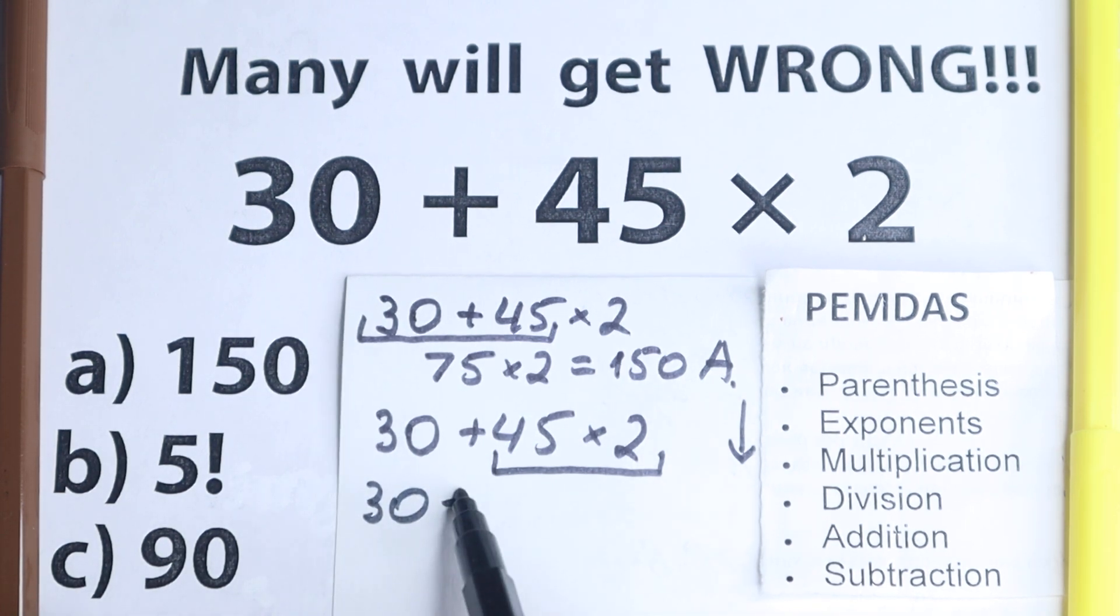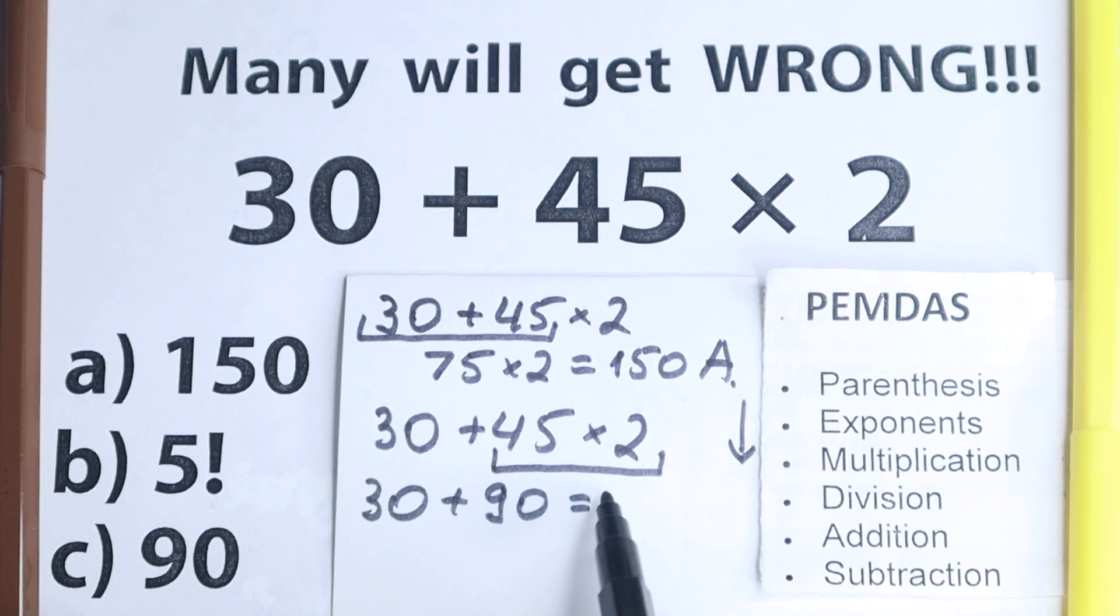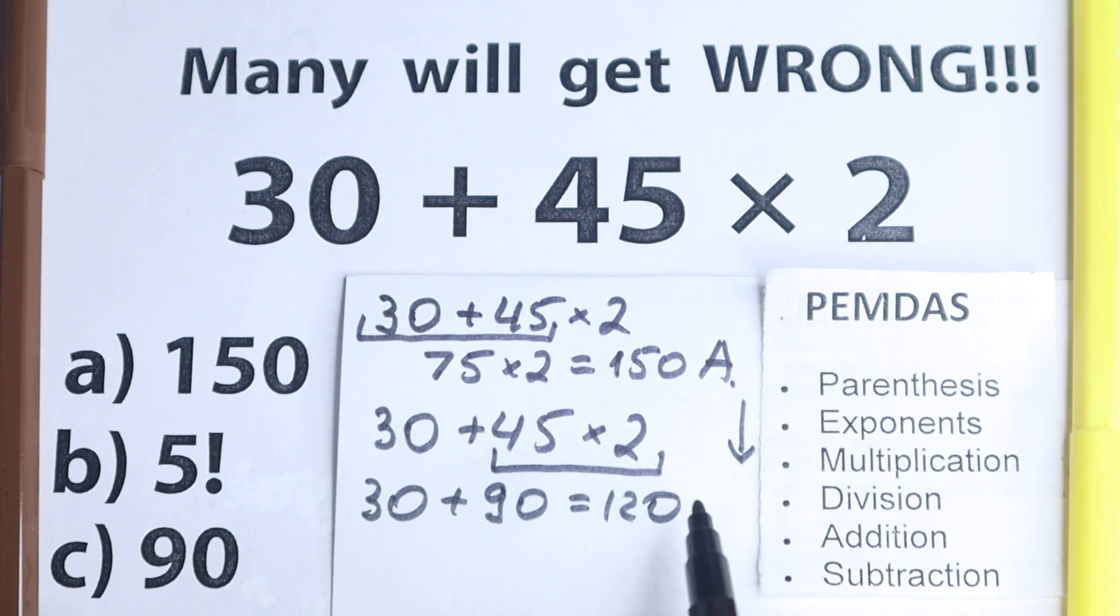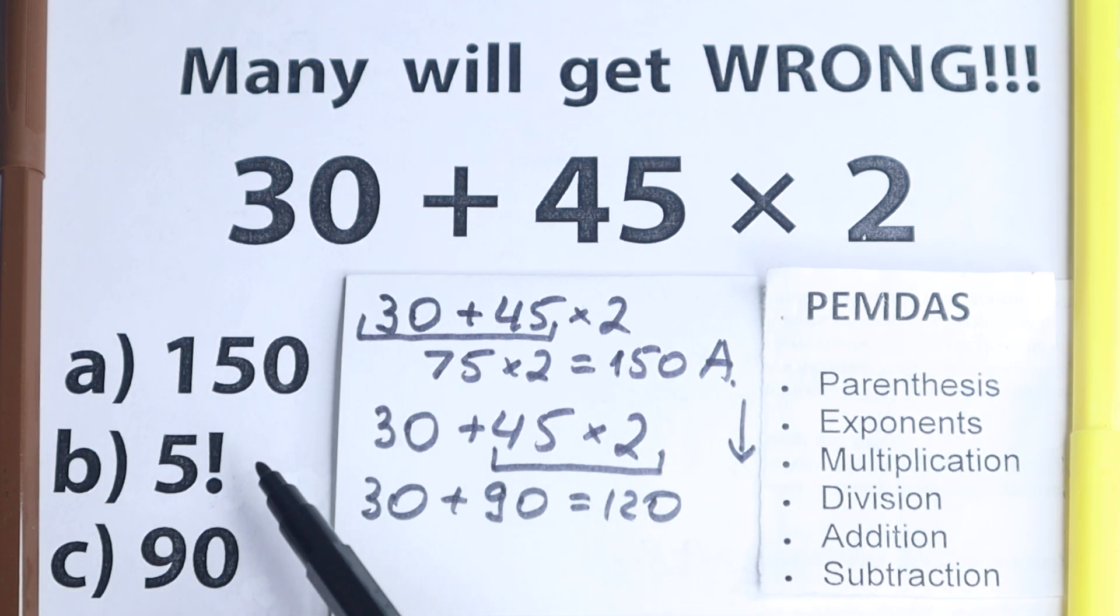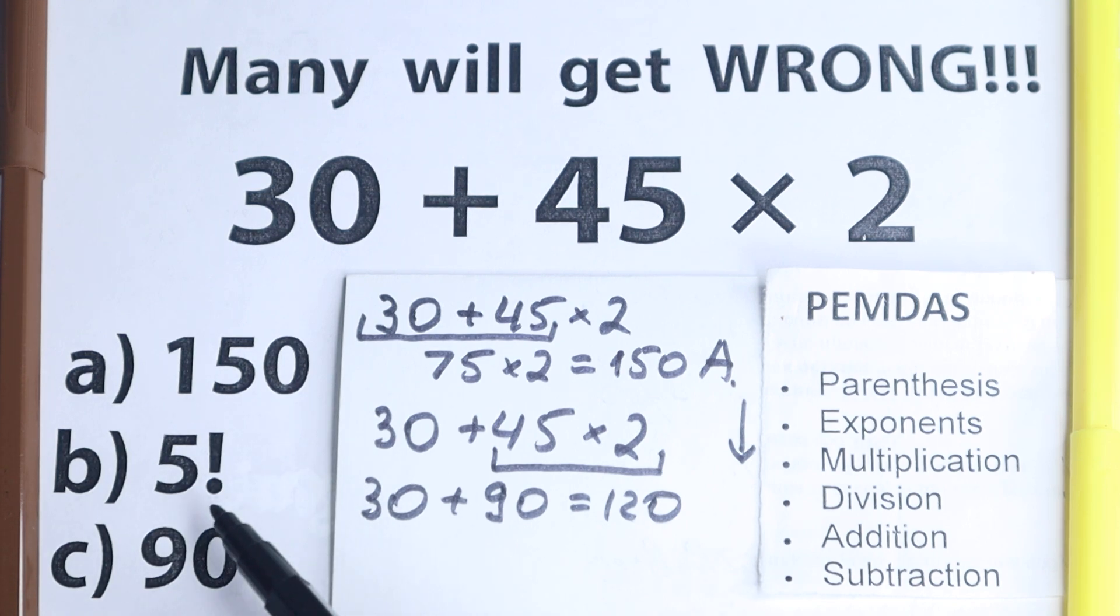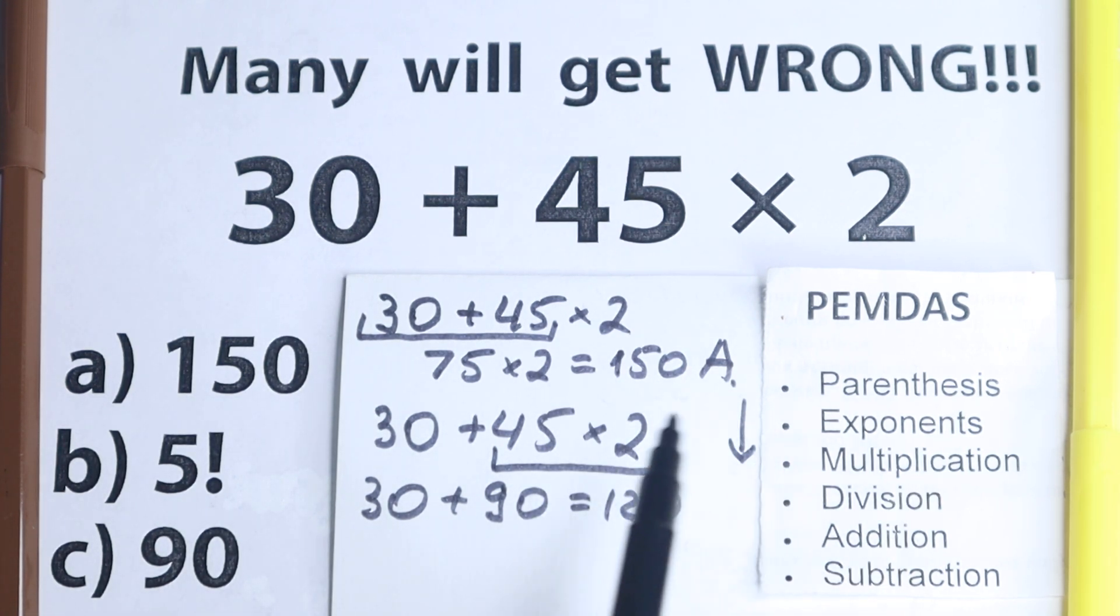And we have 30 plus 90 equals 120. And a lot of students look at options. We have option A is not 120, option B, what about this? What is that? 5 factorial. Option C is 90. And they go back, they say ok, then 150 is the correct answer. They forget about this correct solution.